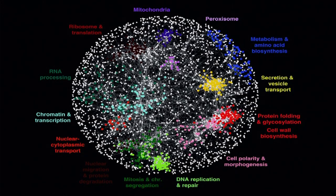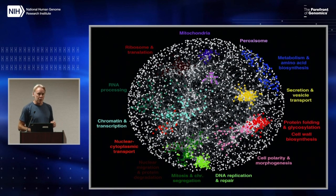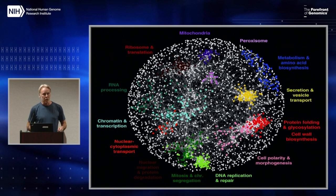I was very lucky at the point in time when Charlie Boone, Brenda Andrews, and company had done all the single knockouts in yeast, to be invited to be on their advisory board. I got to watch them wrestle with: okay, we've knocked them all out, so what? And then they came up with the idea, well, let's put them all together in all possible pairs — and clearly that was going to be impossible.